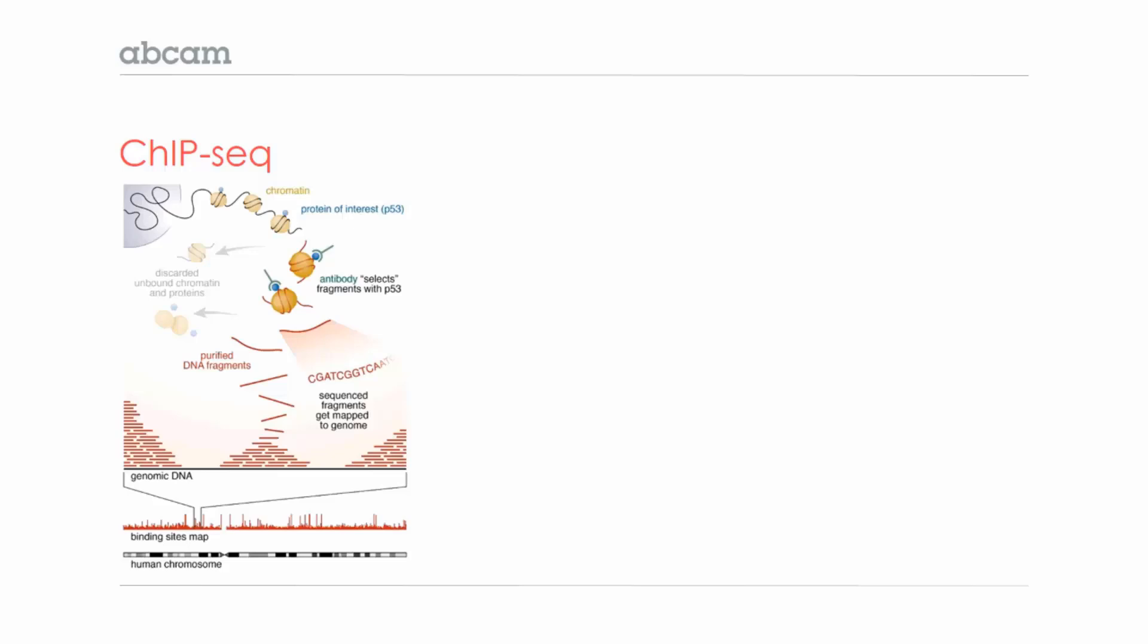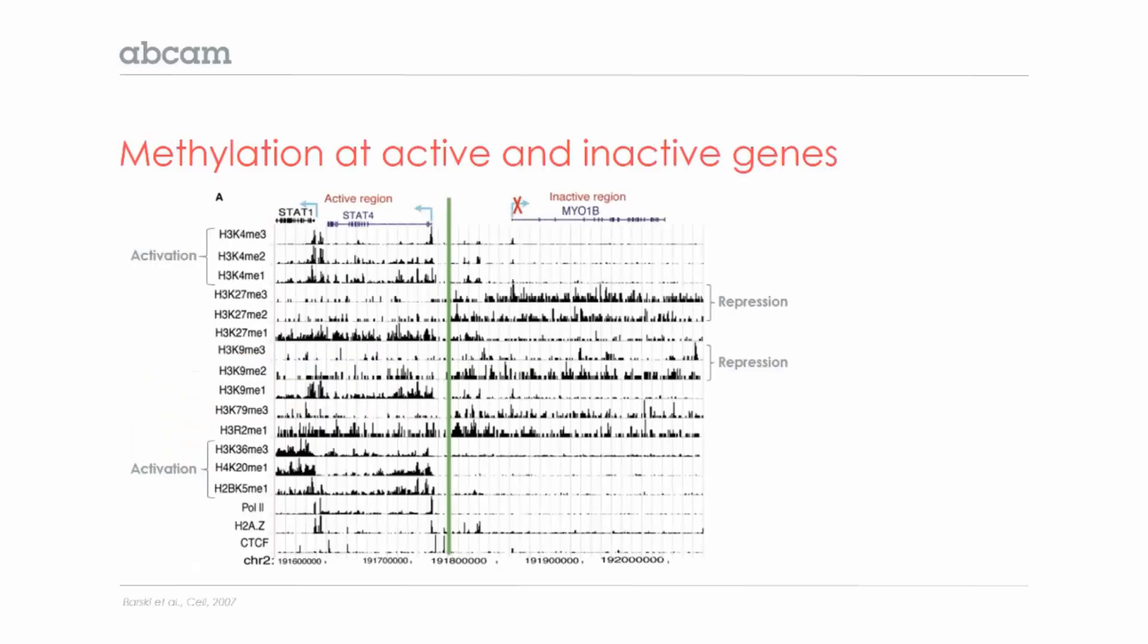These peaks indicate that this sequence was bound to the protein that got pulled down by the antibody. Here's an example of what the peaks look like in these sequencing tracks from a publication that was looking at histone modifications genome-wide.